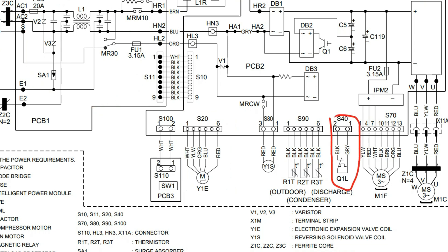Over here we have an overload protector, and another one here — those just protect components in the system from surges. I also mentioned varistors earlier — they act kind of like a shunt, doing a similar thing: any surges in the power supply get sent to earth ground. You can see there's absolutely a huge effort here to control and stabilize these circuits. The level of control is just completely obscene — the micromanagement going on. But this level of control is what gives us the ability to squeeze more and more efficiency out of the system to reach these really high SEER ratings.